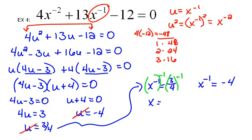But, as you all well know, what you do to one side, you have to do to the other. So I also have to raise the right-hand side to the negative 1 power, which means that I need to flip it. So that answer would be x equals 4 thirds.